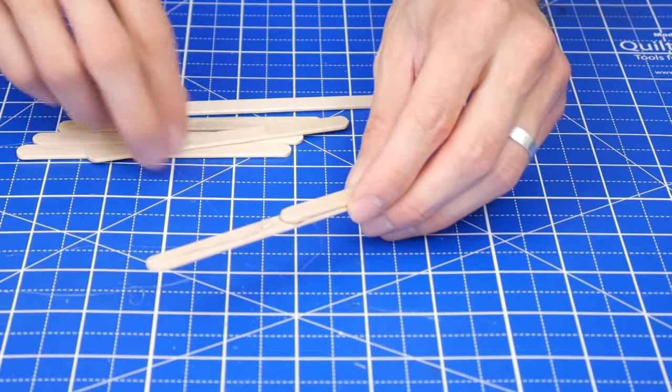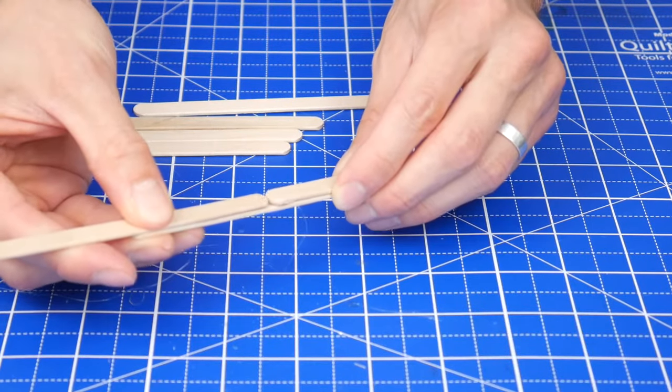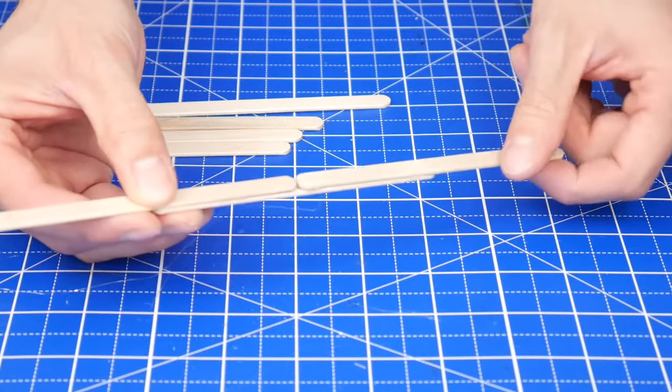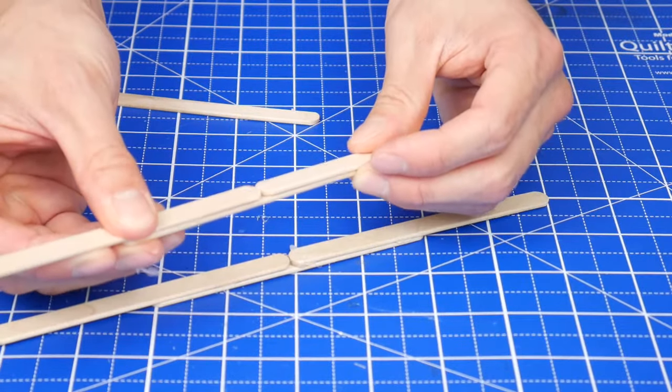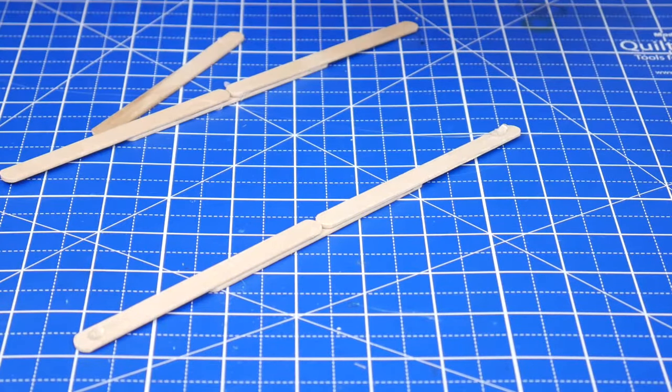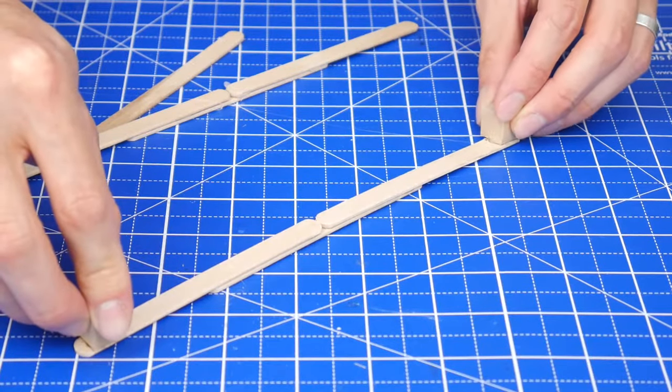Then glue on another stick so that there are two sticks that are end to end with one stick connecting them. Repeat one more time. Then glue two regular cubes onto the ends of the catapult arm here and here.